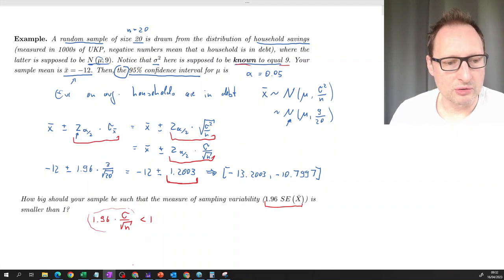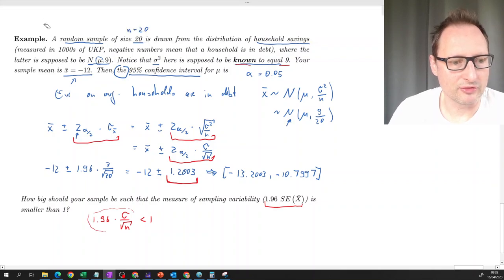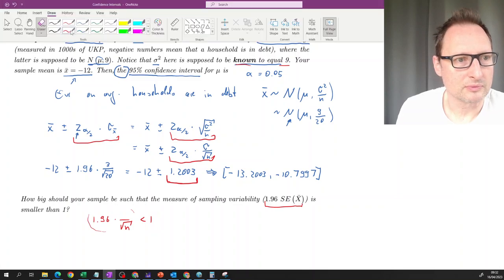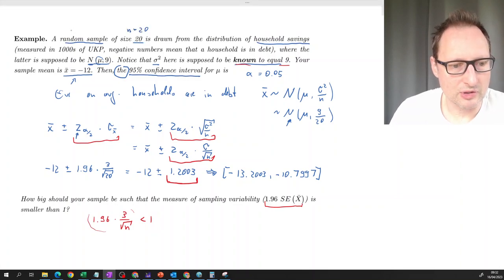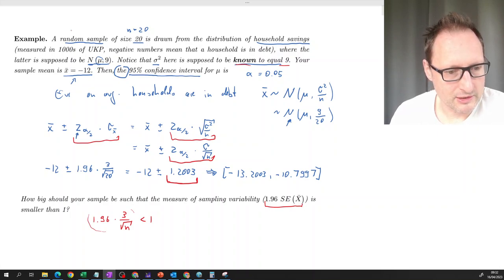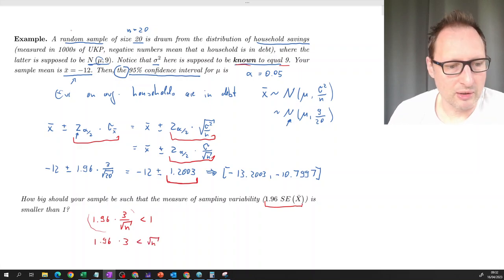So basically we have an inequality. And I should perhaps to make it clearer, for our example, this value here is 3. So it's obvious that we only have one variable in here. So let's just solve this. Perhaps the easiest thing is to just multiply with square root n. So we get 1.96 times 3, I'm not going to do this, I'm just going to leave it as it is, is smaller than square root n. Now we're going to square this.